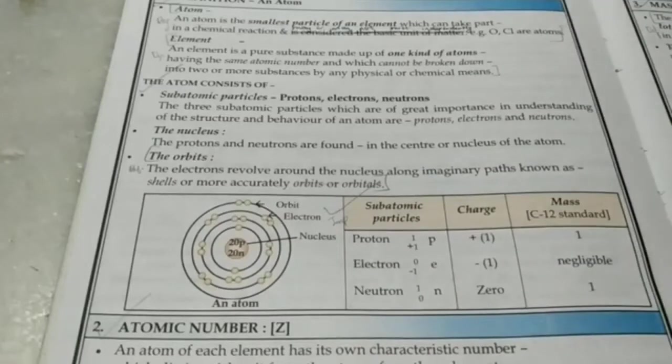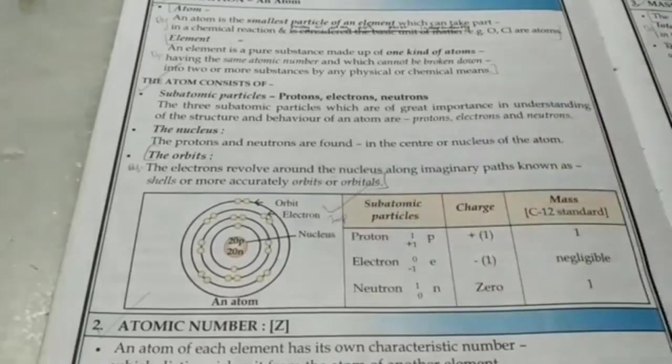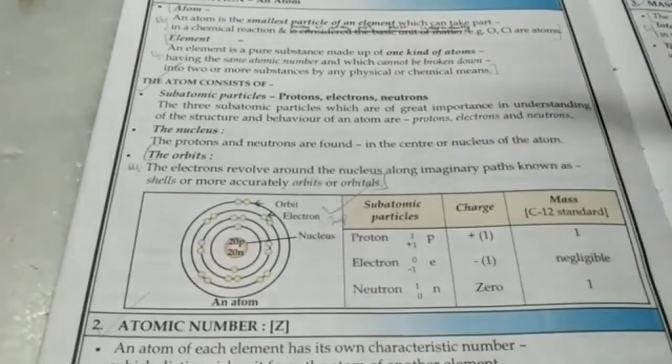Right now, all we need to know is an atom contains a nucleus, which has protons and neutrons, and it has orbits, which has electrons.